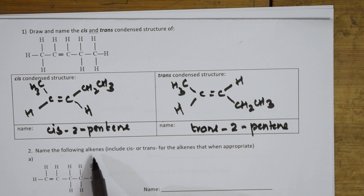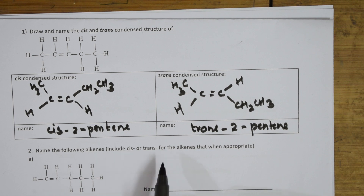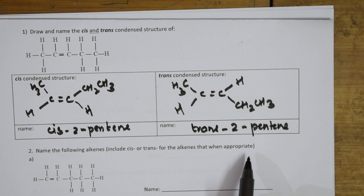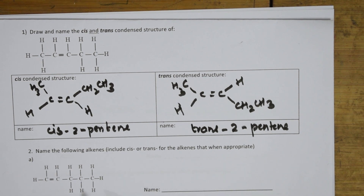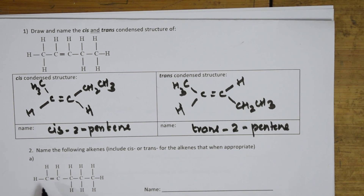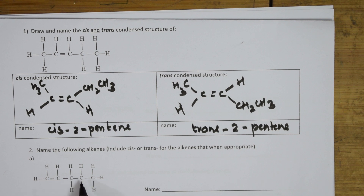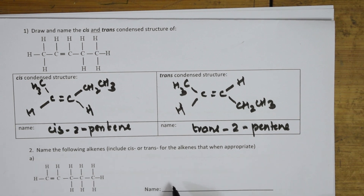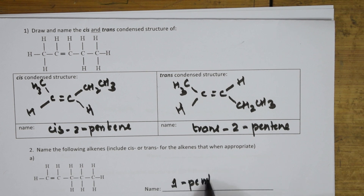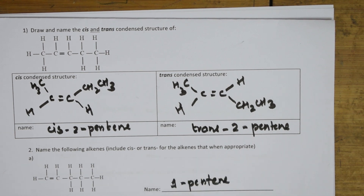Now let us name the following alkenes, including cis and trans where appropriate. They ask us to name this. If there is cis, you need to mention cis. Otherwise name it normally. Here this is a structure given to me. I should start numbering so that the double bond gets the minimum number. Counting: one, two, three, four, five — five means pent. The double bond is at the first position, so it is 1-pentene.